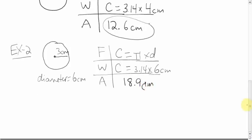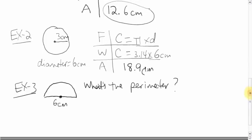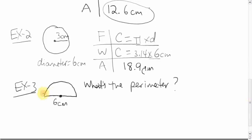Multiply those together to one decimal place and you should get 18.9 centimeters. Moving along — what if you had a trickier question with a composite shape? We're told the distance across is 6 centimeters and the question asks for the perimeter of this figure. Perimeter and circumference mean the same thing — it's just the distance around something. For this shape you have to travel along the curved part and also the straight line. The first thing to do with a weird shape like this is to break up the shapes.